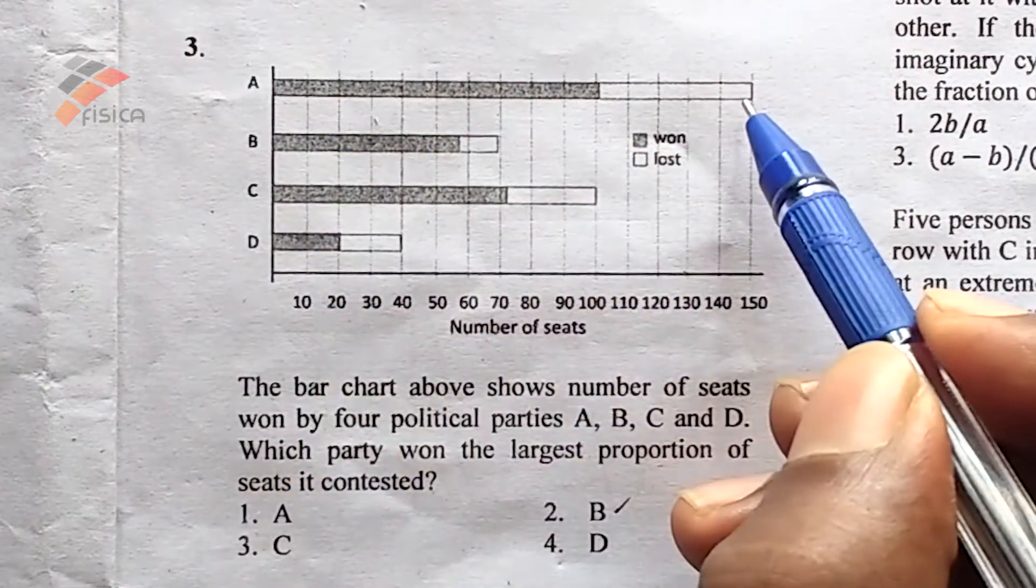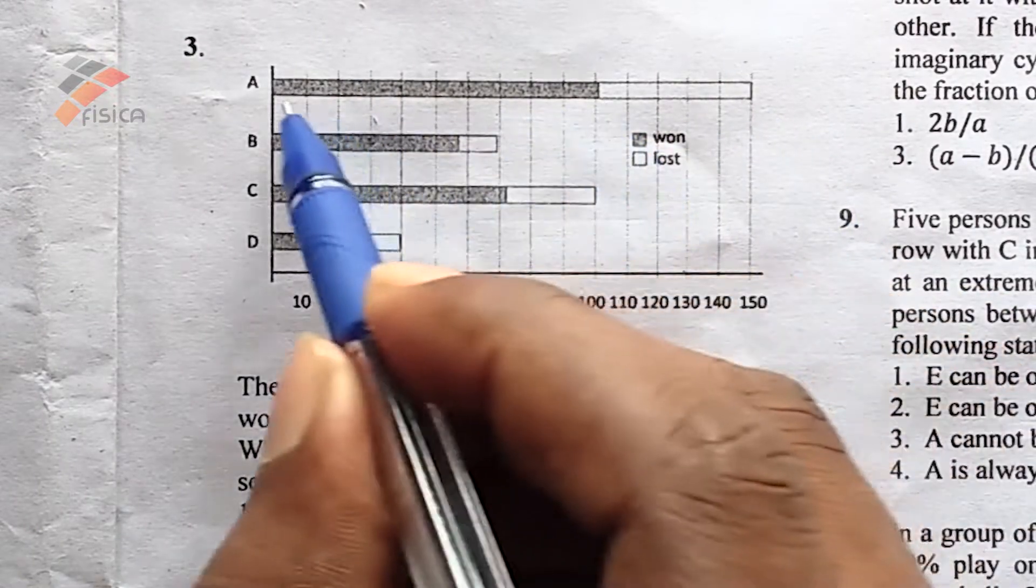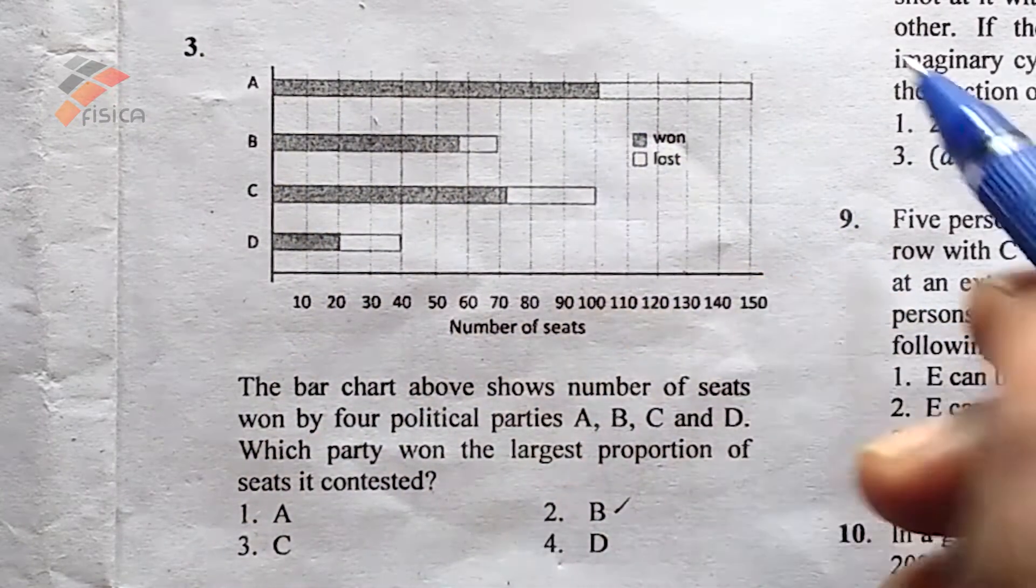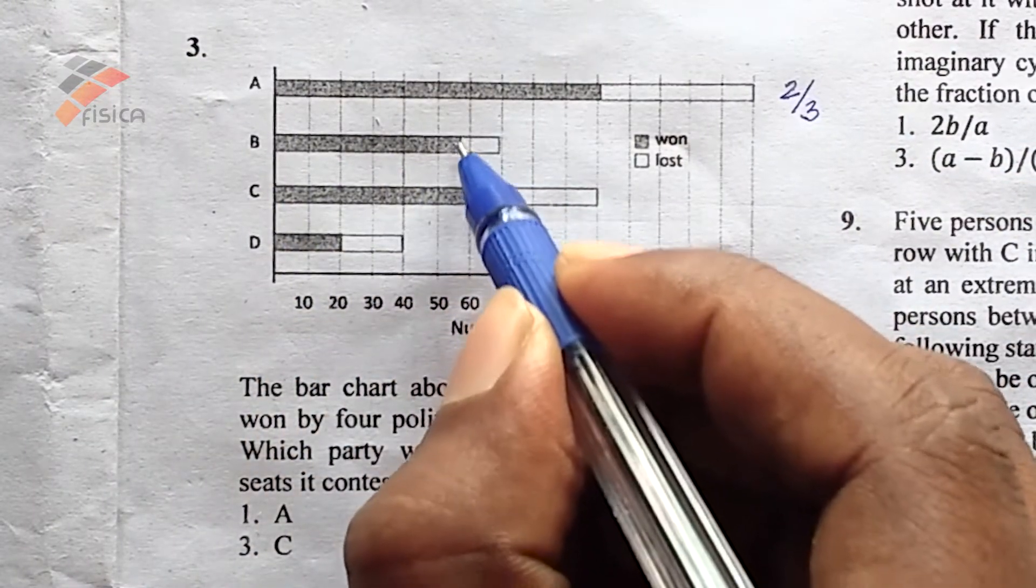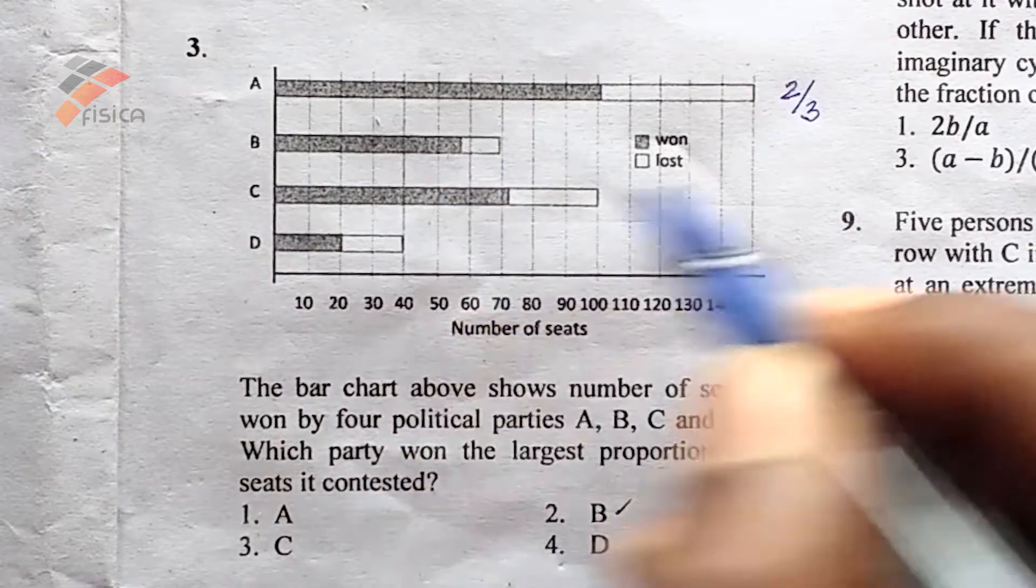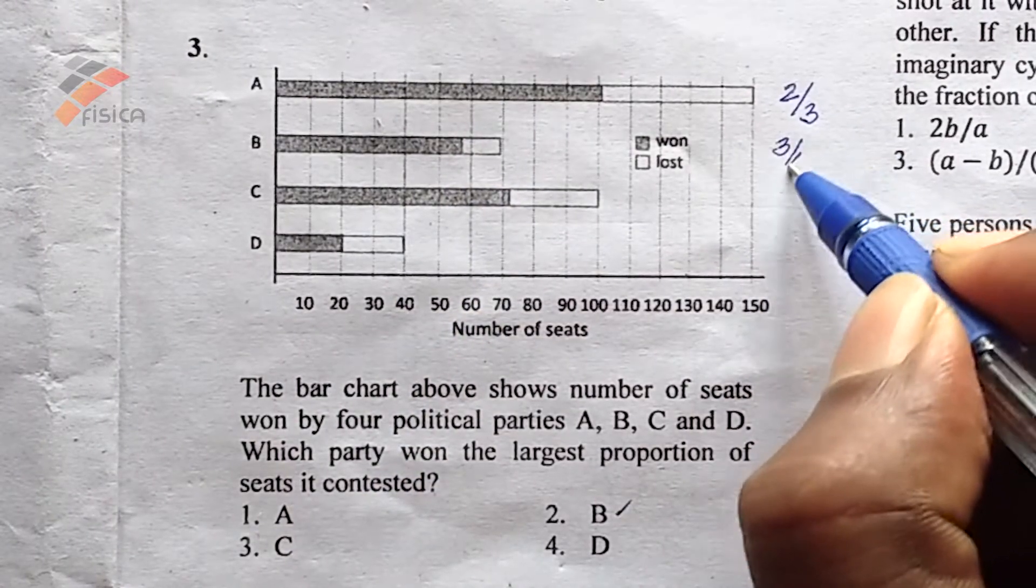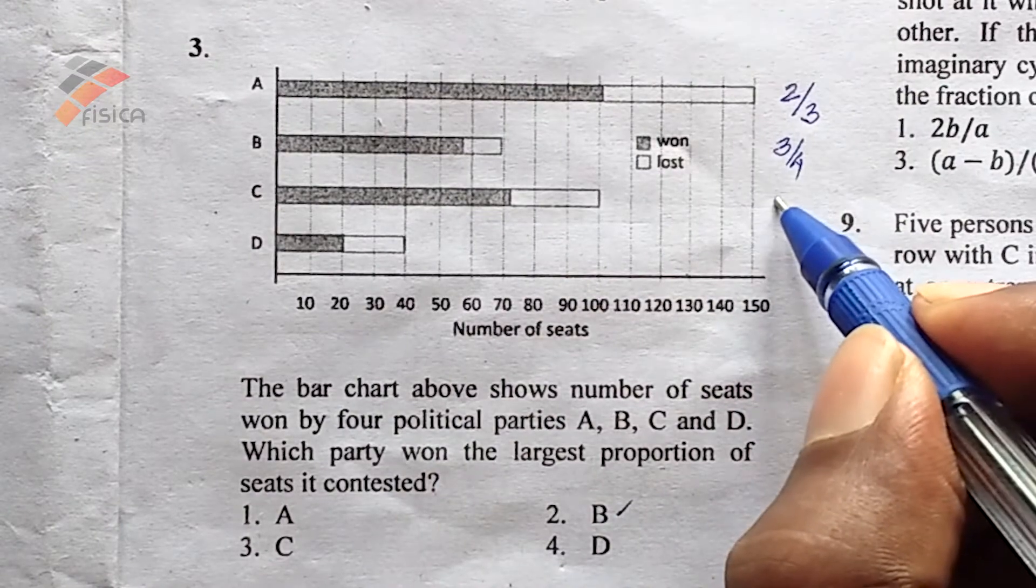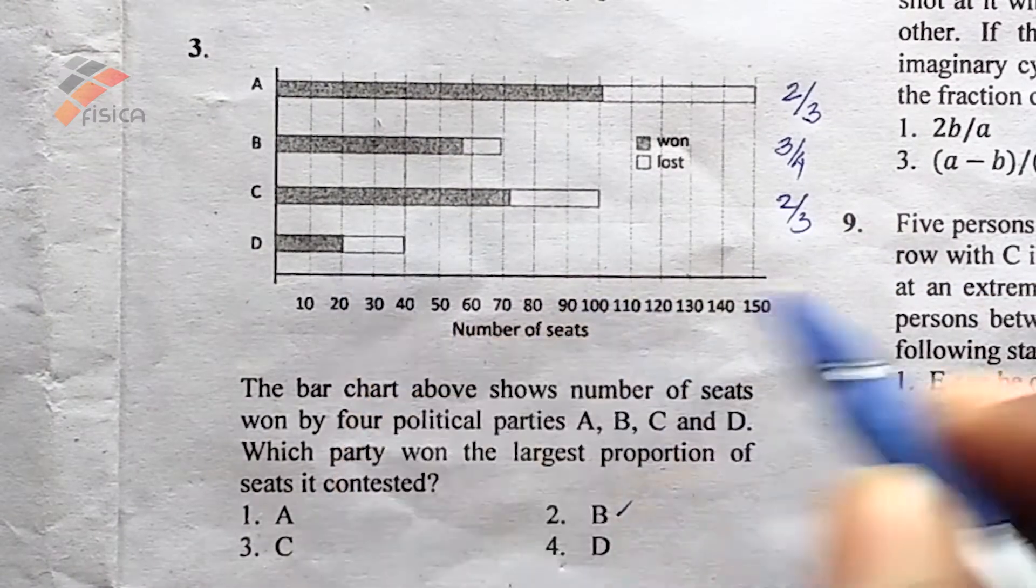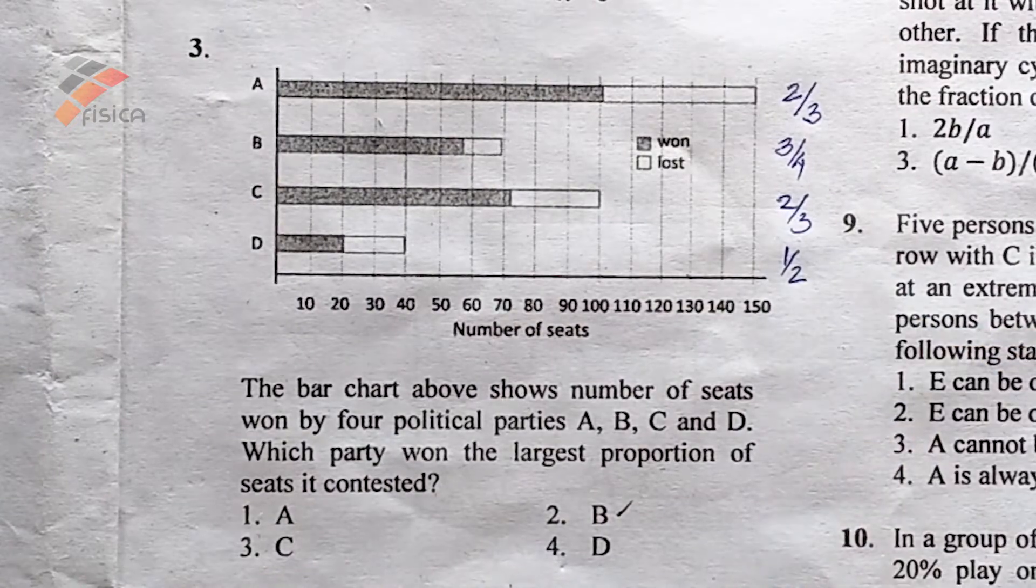In this bar chart, this is almost two-thirds of total, and this... the shaded portion is almost three-fourths of the total, and this is almost two-thirds of total, and this is one-half of the total.